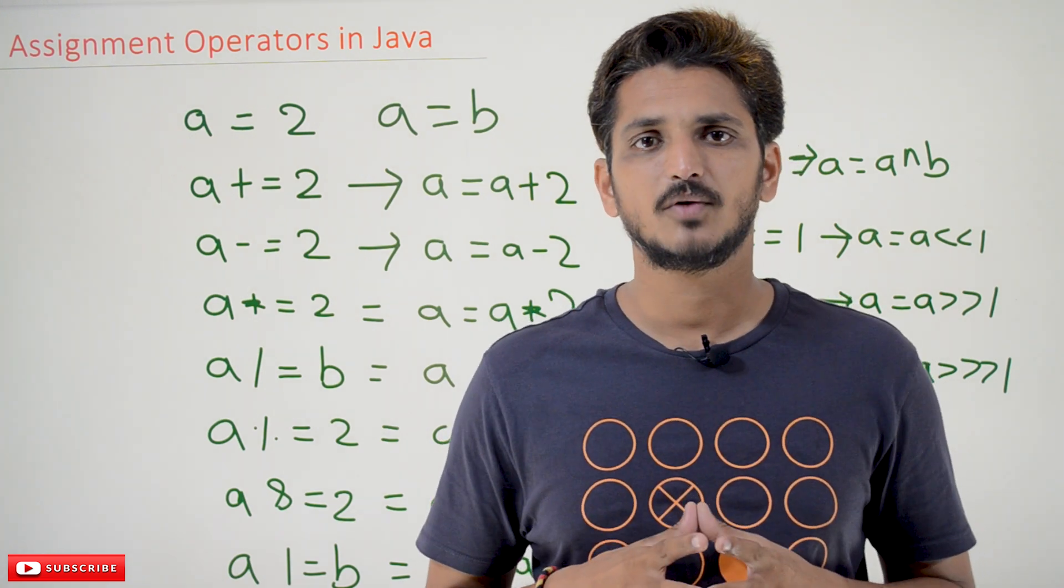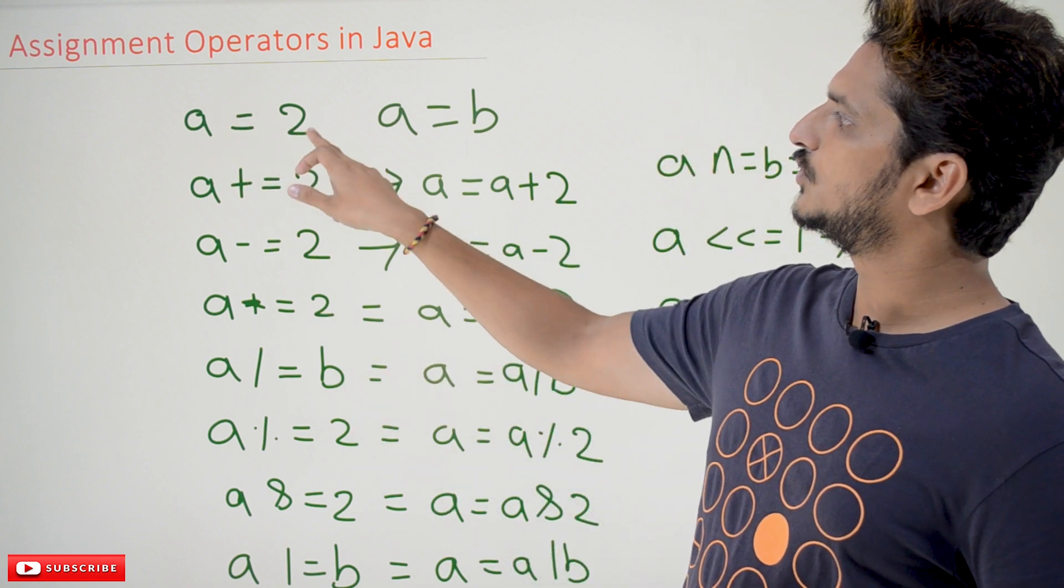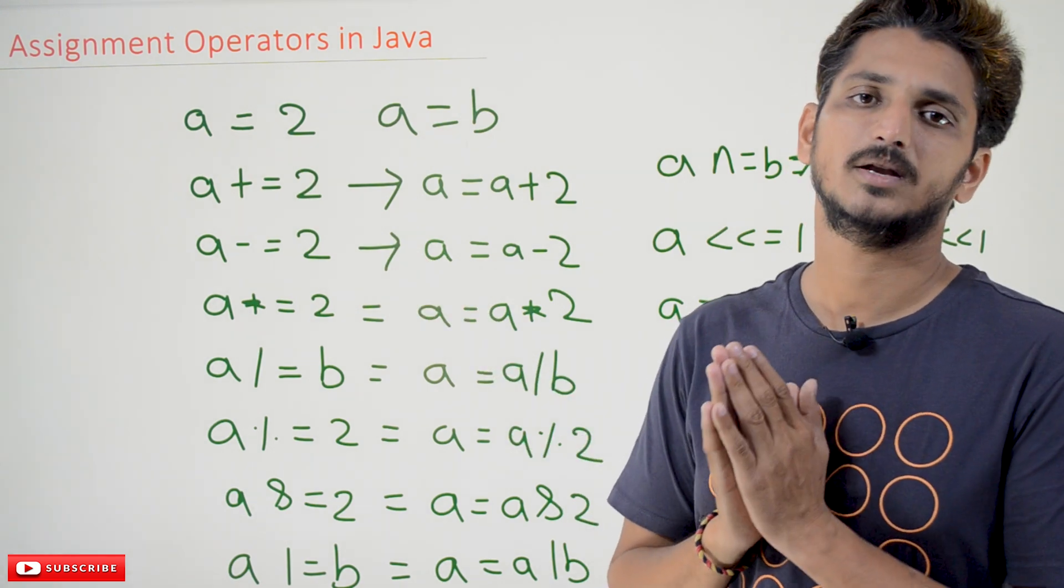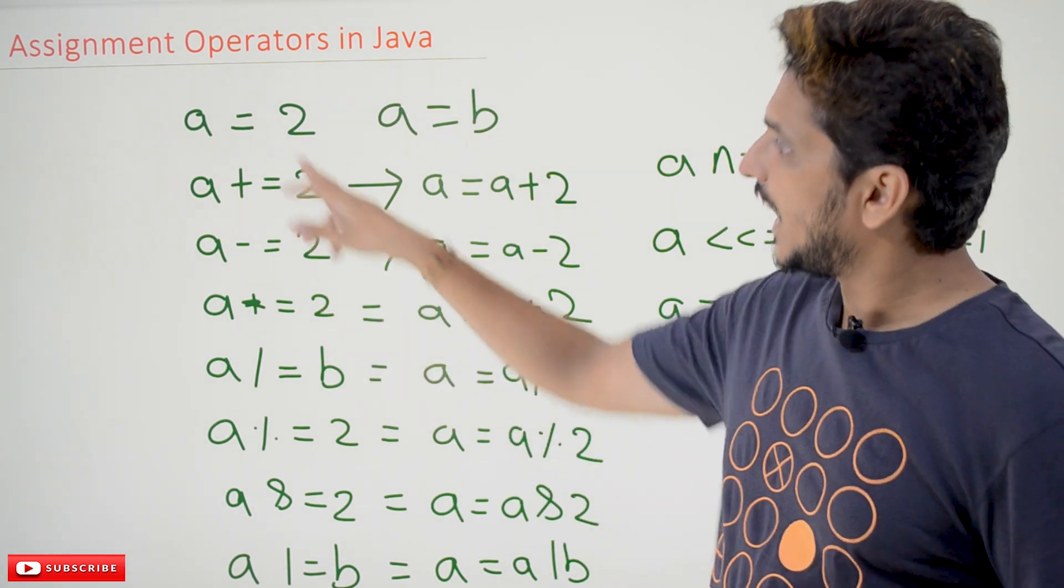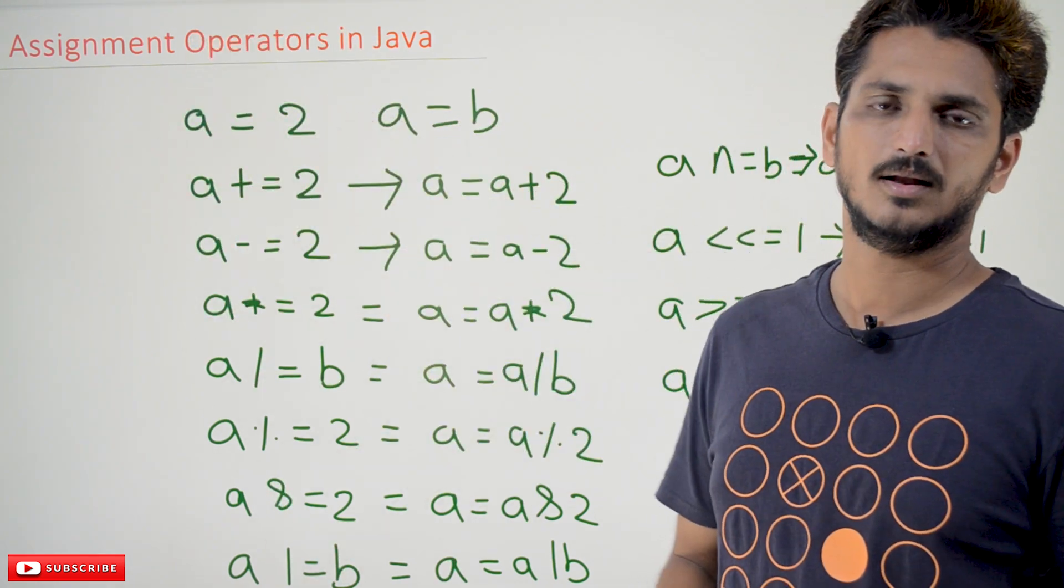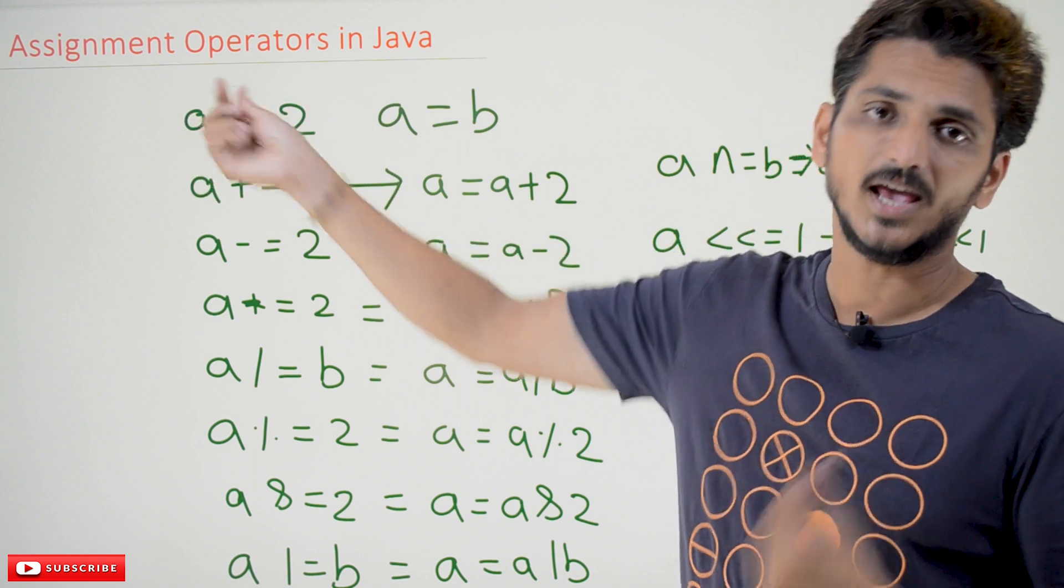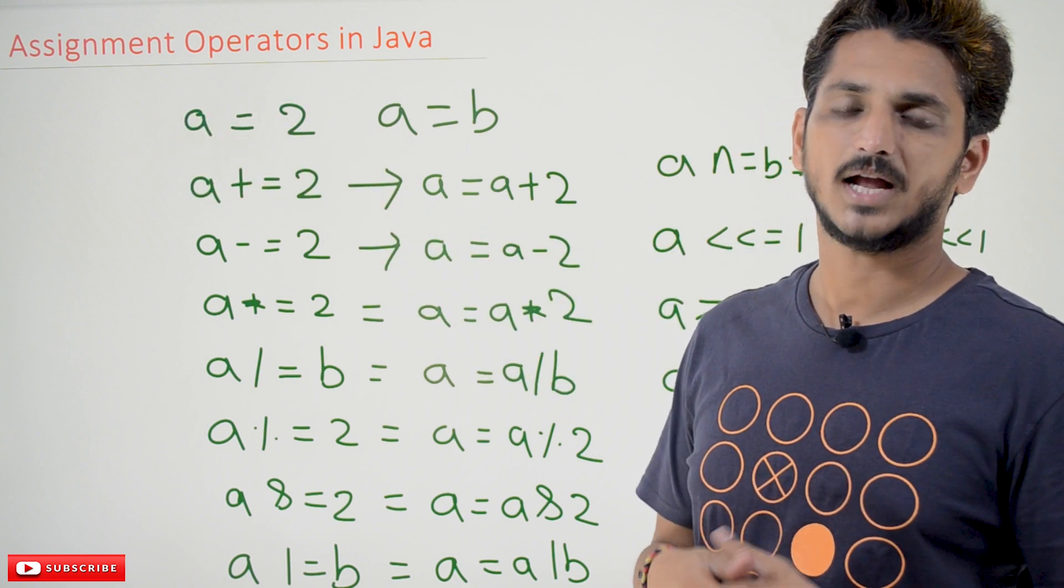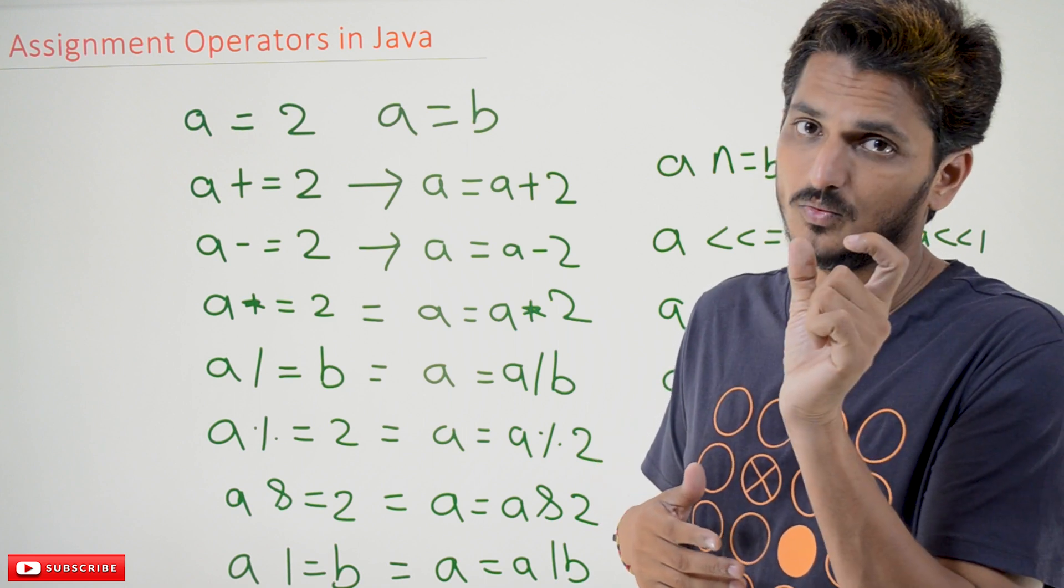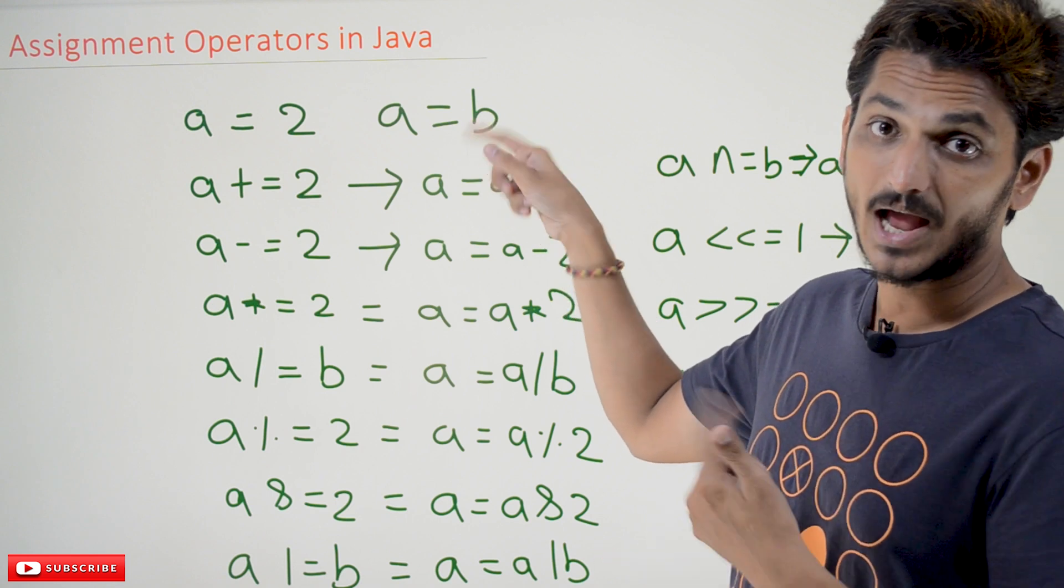The link for the playlist is provided in the description below. Coming to today's class, equal to, we are going to use it for assignment operator. It is going to help you in assigning a value to a variable. So the value 2 is getting assigned to variable a. That is what we are going to use for assignment operator.